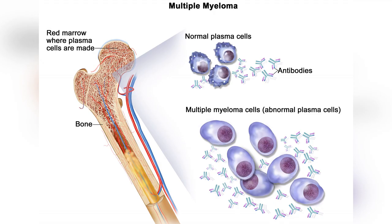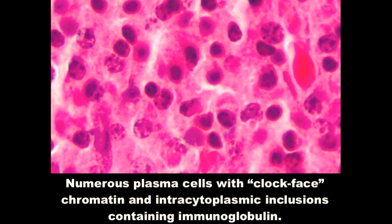Multiple myelomas are B cell proliferations with neoplastic plasma cells. Plasma cells are large lymphocytes with a high nucleus to cytoplasm ratio. They have a characteristic appearance on light microscopy, described as having an eccentric nucleus with chromatin in a clock face arrangement. These neoplastic plasma cells secrete a monoclonal Ig or Ig fragment, as opposed to polyclonal Ig's seen in an immune response.